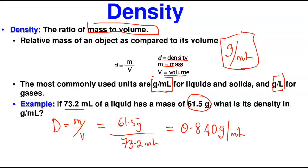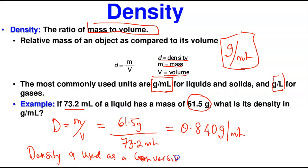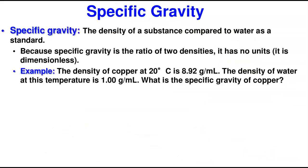Because density has two units, density can be used as a conversion factor — for volume and for mass. If you want to find mass or volume and you have the density, you use the density value and adjust it depending on what you want to find. If you want to keep the mass, keep grams on top. If you want to keep the volume, keep the volume unit on top. Let's see how this is applied after we introduce one more important concept.